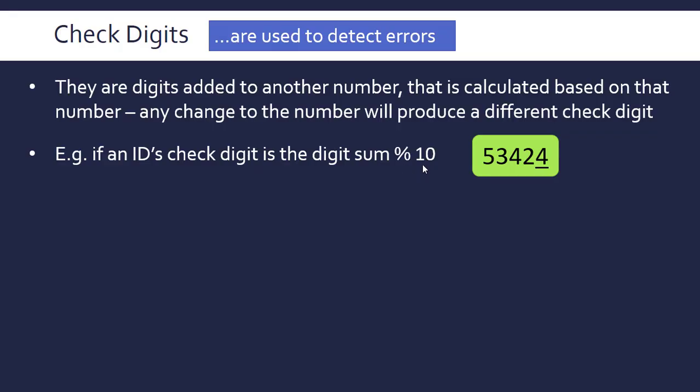14 mod 10 is 4 because 4 is the remainder when 10 goes in once, so 4 is our check digit in this example.